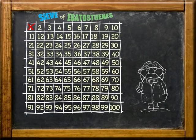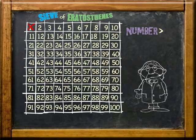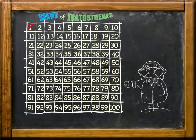Start by crossing out the number 1. It's because a prime number is any number greater than 1 and only divisible by itself and 1. So 1 cannot be a prime number because it is not greater than 1.